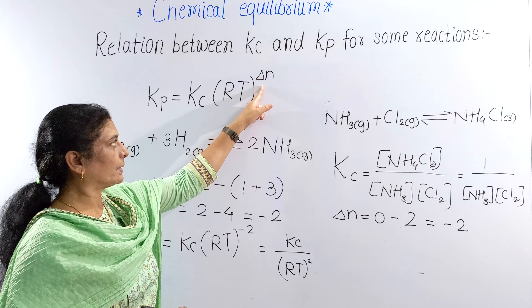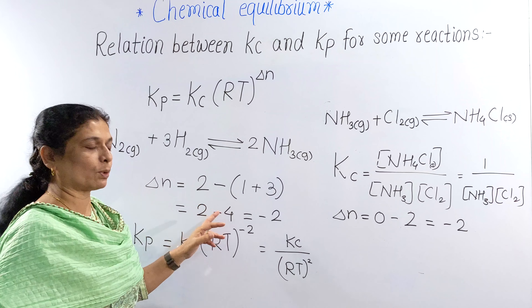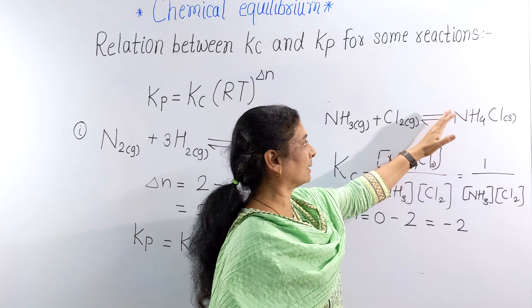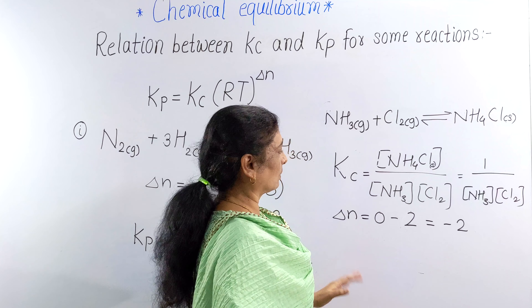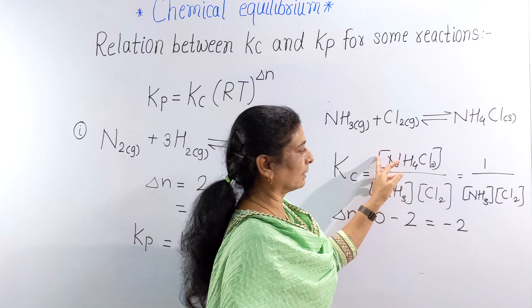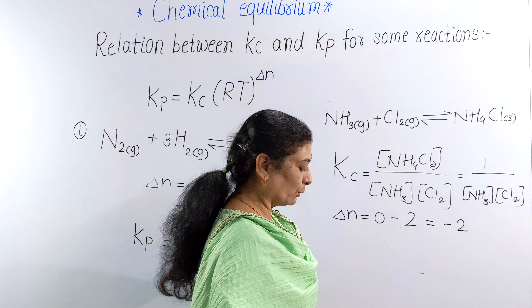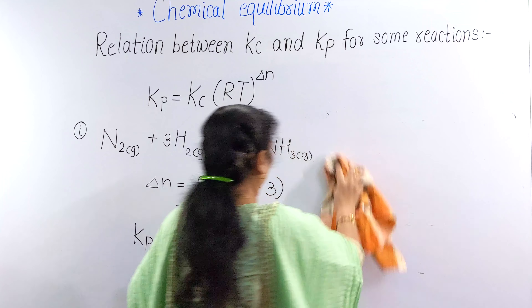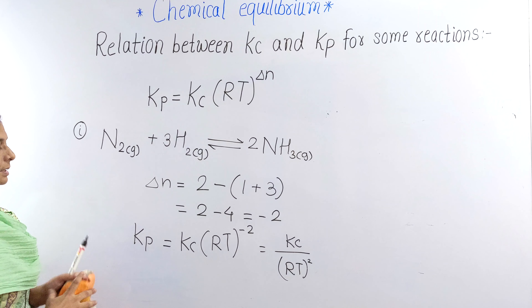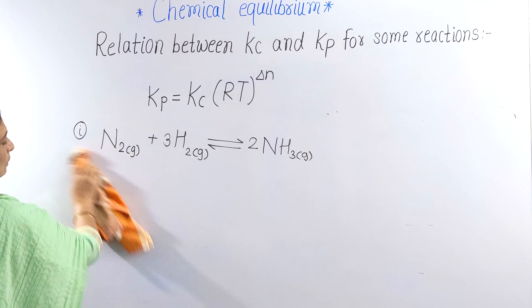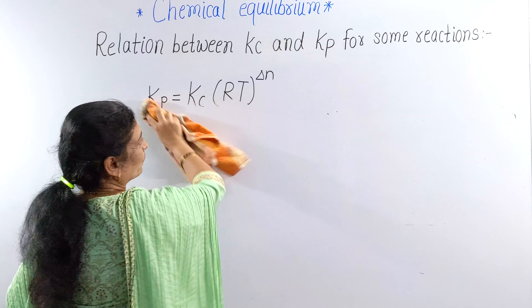Remember, delta N is the difference between the number of moles of gaseous products minus the number of moles of gaseous reactants. If a product is in the solid state, it contributes zero moles to gaseous products. Study well. Thank you.